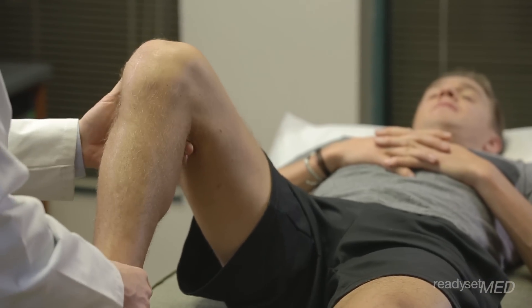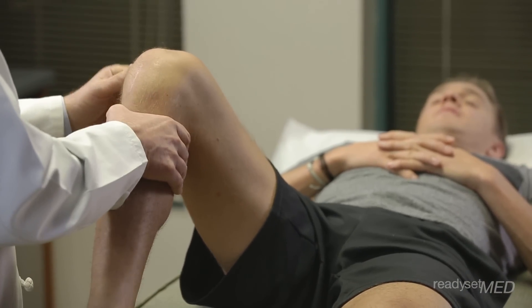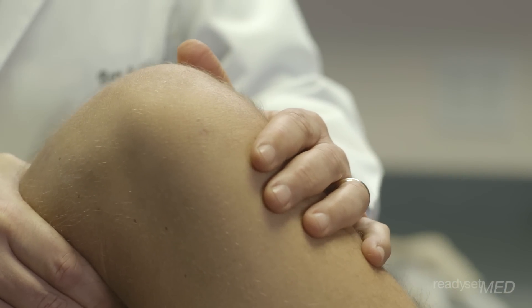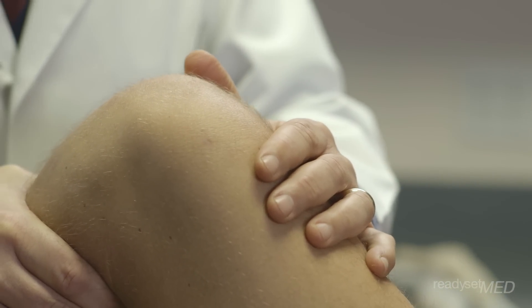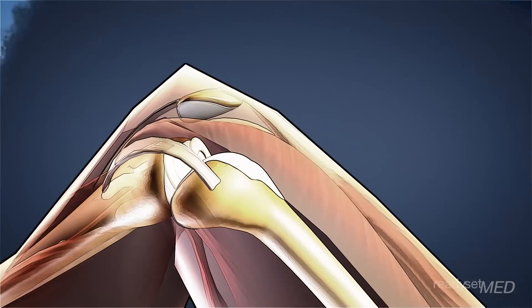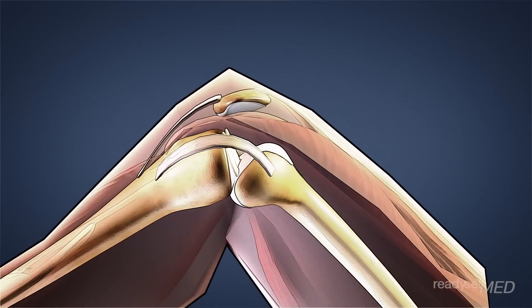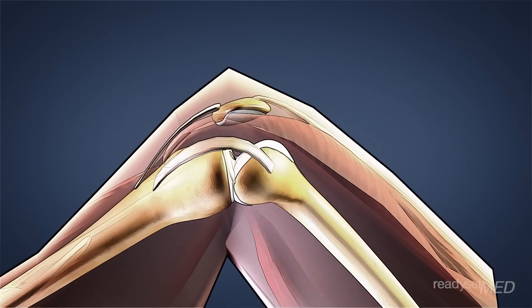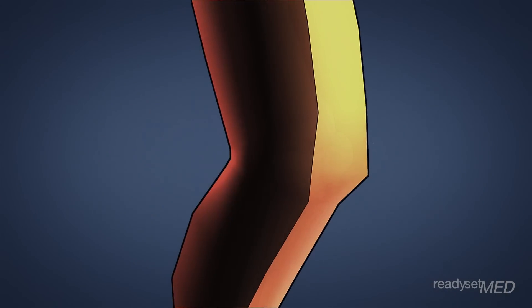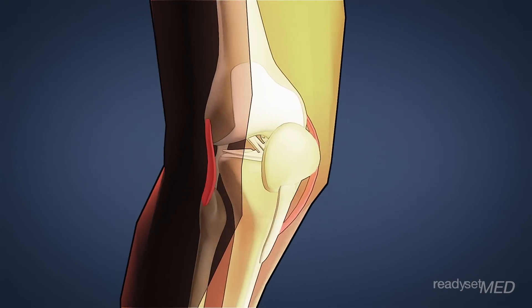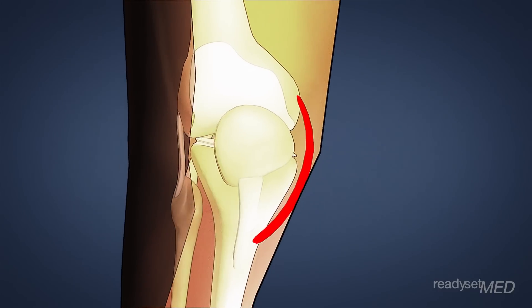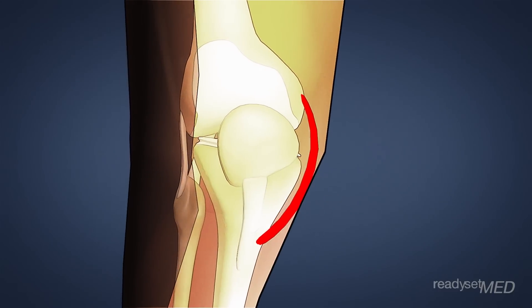To check the PCL, the doctor will perform the posterior drawer test. This is conducted in a very similar fashion to the anterior drawer test, except instead of pulling on the tibia, he'll attempt to push it posteriorly. An intact PCL will firmly stop the subluxation of the tibia; if it's torn, the endpoint will be diminished.